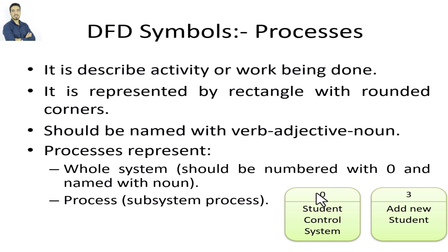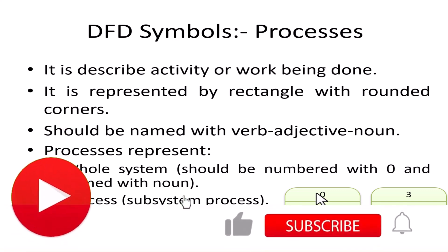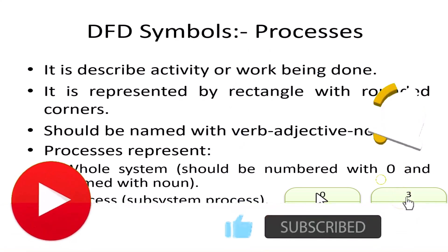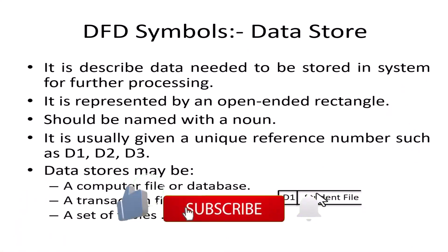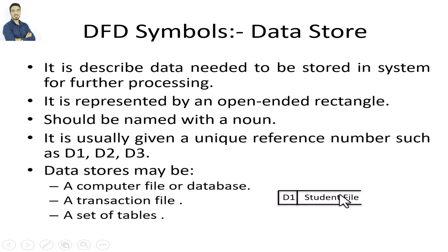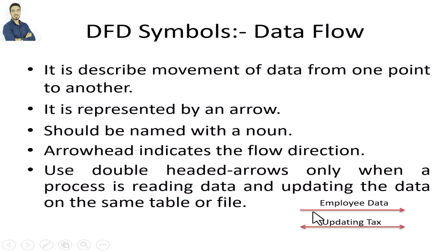An important rule: any system should have at most seven processes maximum — some references say nine, but we recommend no more than seven. Next, the data store has the shape of an open-ended rectangle.